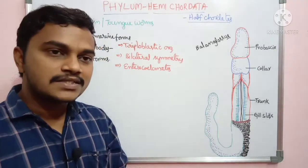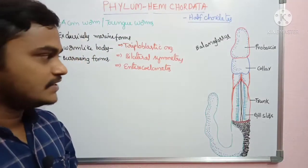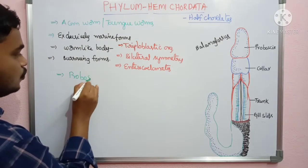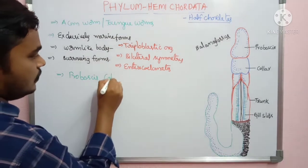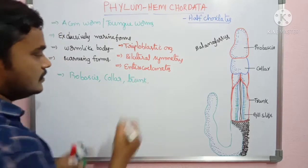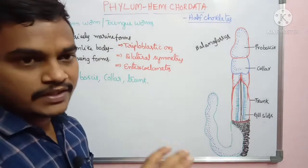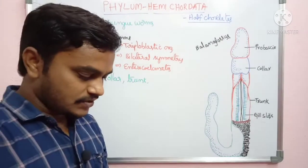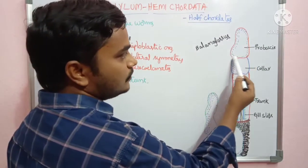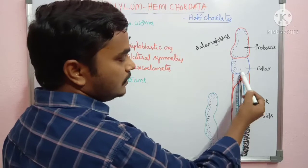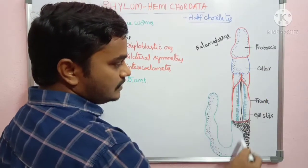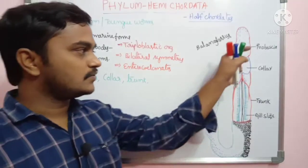In hemichordates, the body is divided into three regions. The first is the proboscis, the second is the collar, and the third is the trunk. There is no tail region — the trunk ends with the anal region. So proboscis, collar, and trunk are the three body parts present in hemichordates.